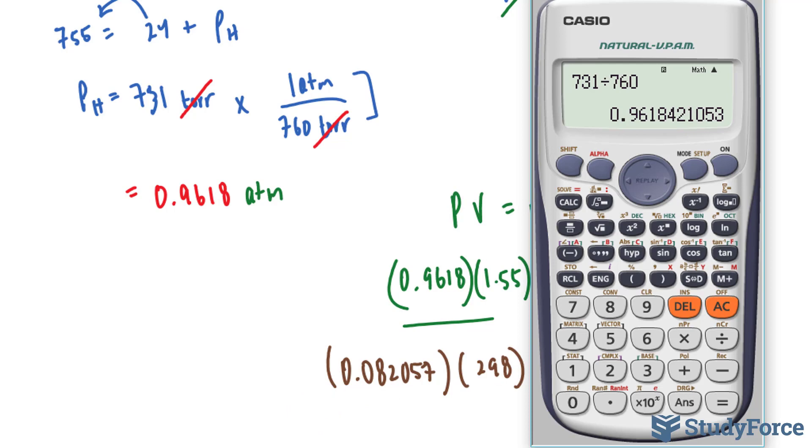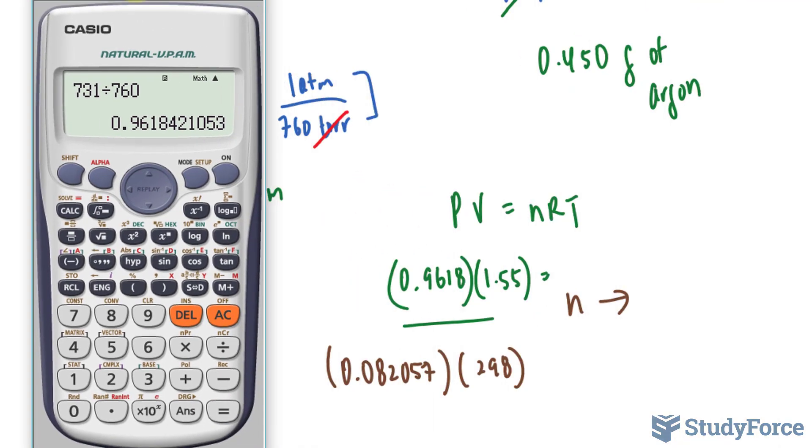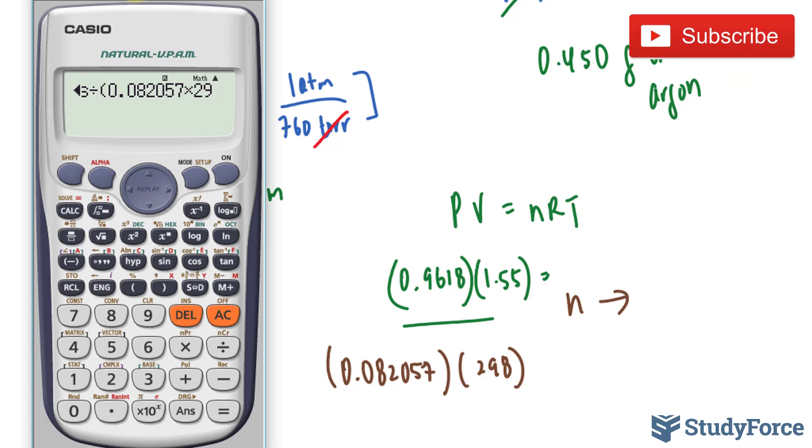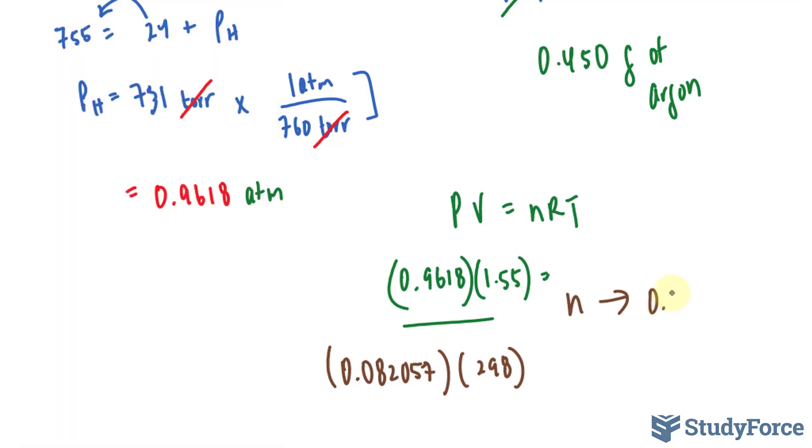Let's use our calculator, we'll start with the top. The number that I have multiplied to 1.55 divided by my gas constant multiplied to 298. Make sure that your numbers are accurate. And your final answer is 0.0609, 0.0609 moles of hydrogen.